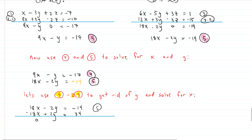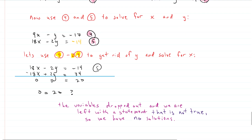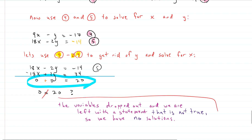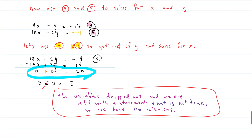When we add these two equations, all of the variables drop out and we get zero equals 20. Does zero equal 20? It does not — that's a false mathematical statement. All our variables dropped out, leaving us with the false statement zero equals 20. So we know we are in the no solution category. If you guys have questions, let me know. Thanks for watching.